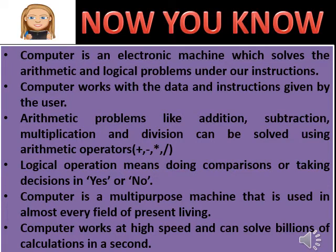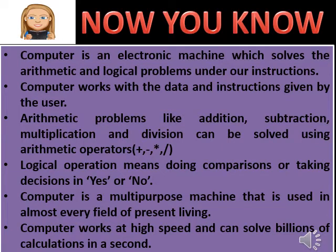Let's recall important points from this chapter. First, a computer is an electronic machine which solves arithmetic and logical problems under our instructions. Second, it works with data and instructions given by the user. Third, arithmetic problems like addition, subtraction, multiplication, and division can be solved using arithmetic operators. Fourth, logical operations means doing comparisons or taking a decision in yes or no. Fifth, a computer is a multipurpose machine used in almost every field of present living. Sixth, computers work at high speed and can solve billions of calculations in a second.